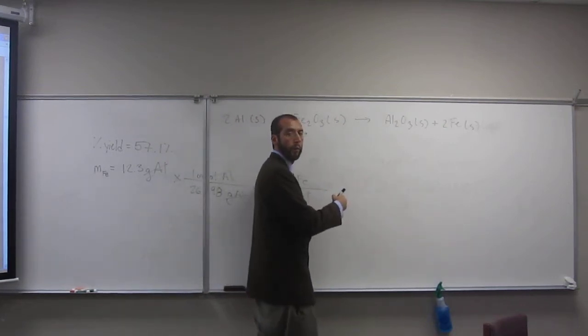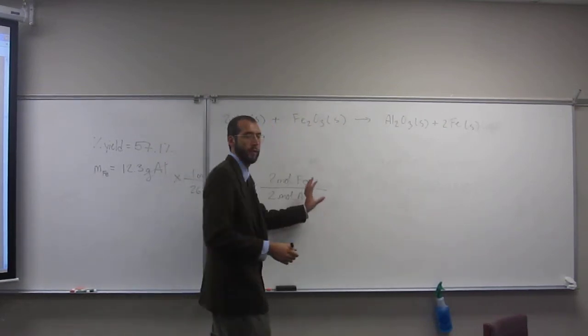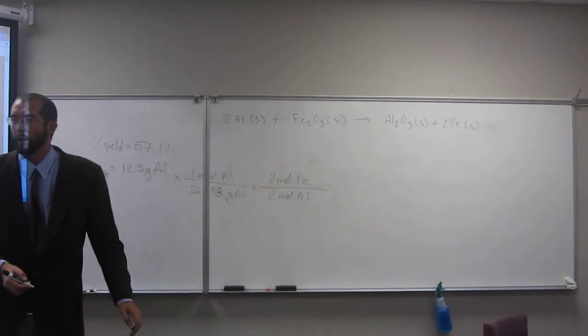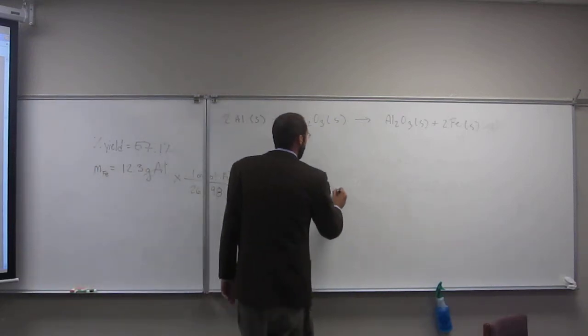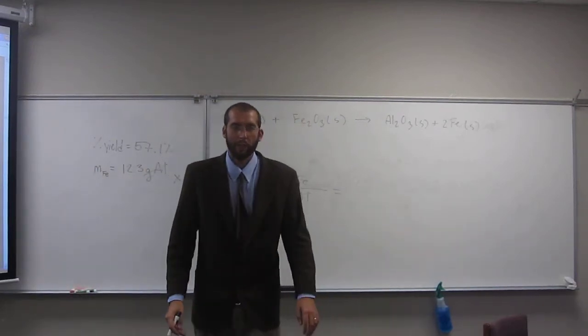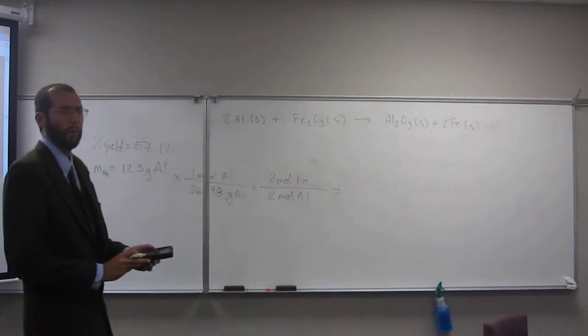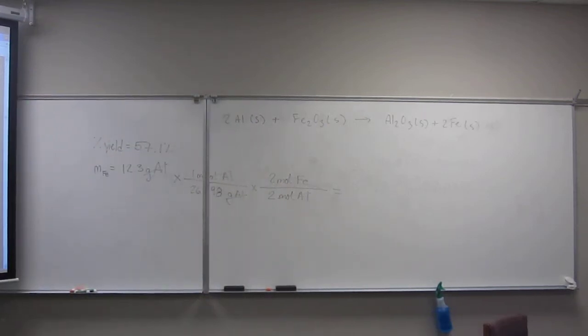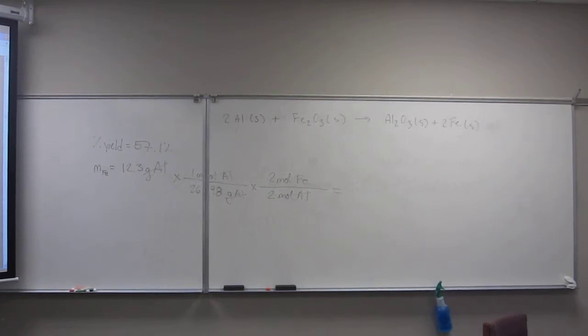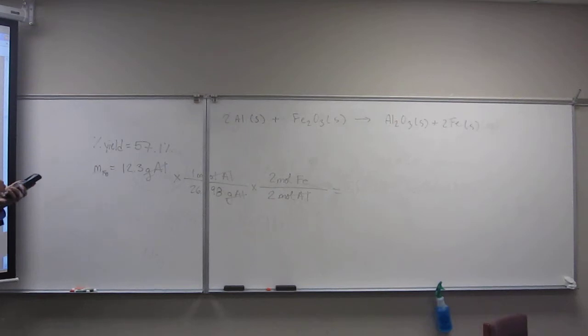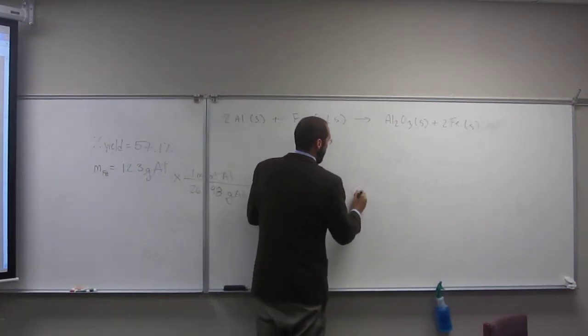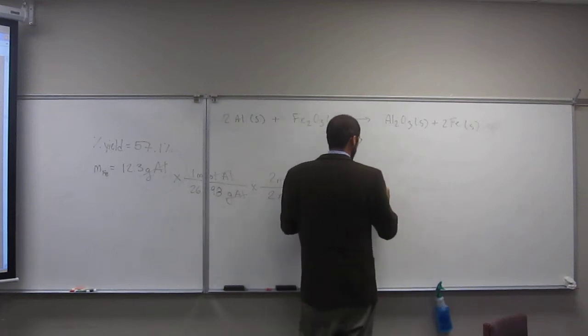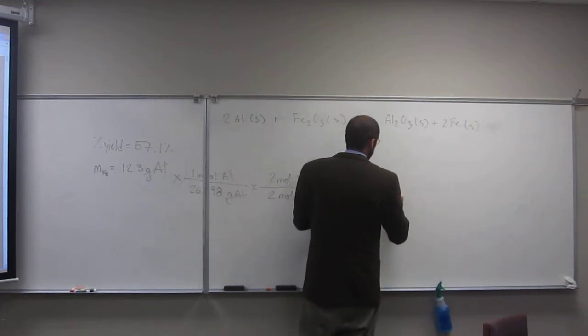And we could stop here if we wanted to, because that would give us the moles, and then we'd just calculate what the moles would be at 57%. Or we could go to the mass. Let's just stop here at the moles. This is kind of what you guys did on your problem, what was it, 4 on your pre-lab. 12.3 divided by 26.98 times 2 divided by 2. You don't have to do that. 0.456, we'll say.